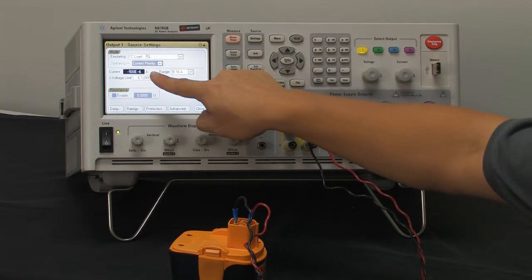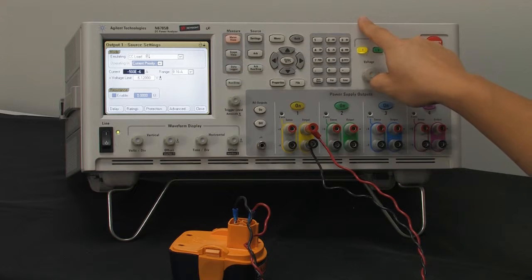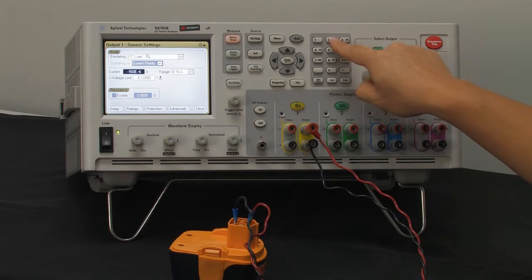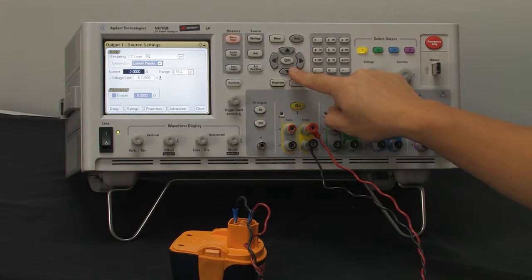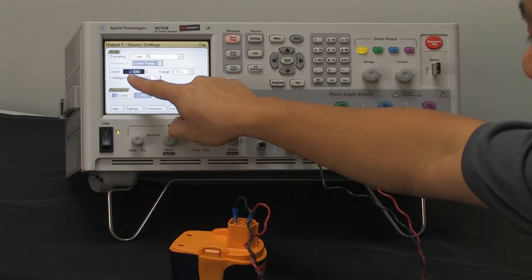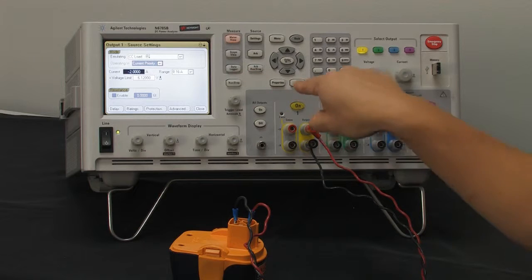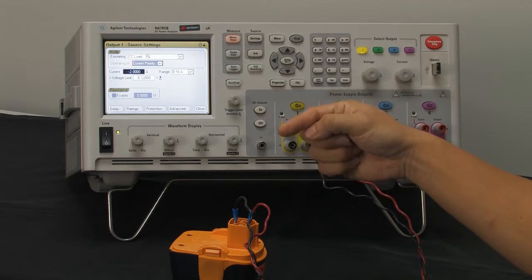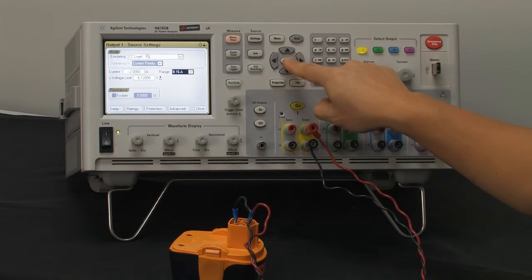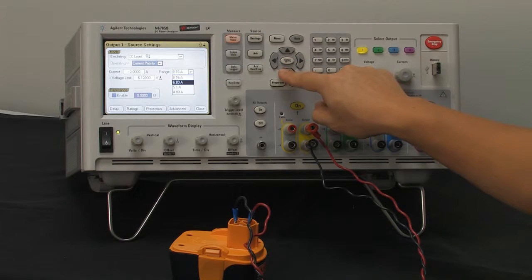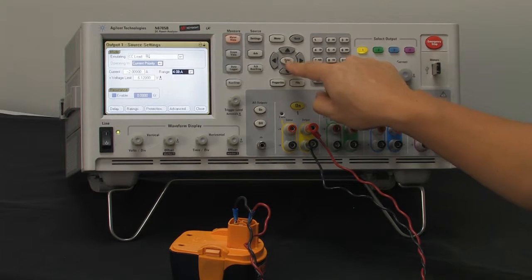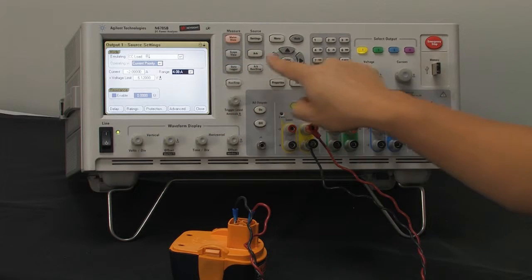Next we jump to the current setting. For this setup, we're going to go ahead and choose 2 amps. And you'll see that it's negative 2 instead of positive 2 to indicate that current is actually going into the power supply instead of coming out. For our current range, we're going to go ahead and choose around 4 amps, which is well above what we set the current to.